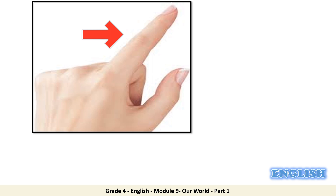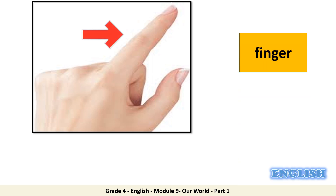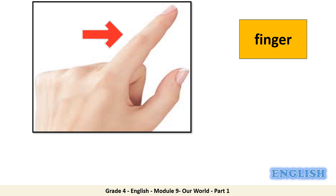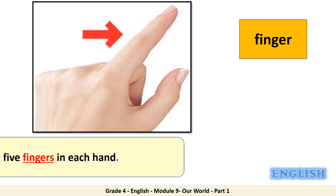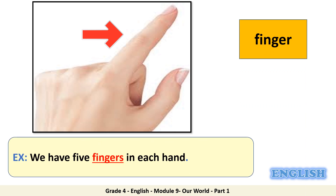Have a look at this picture. What is this? It's a finger. Can you use this word in a sentence? We have five fingers in each hand. Can you tell me which part of speech it is? It's a noun.